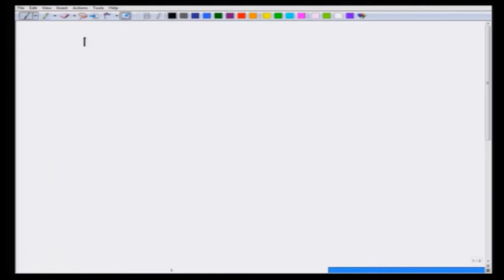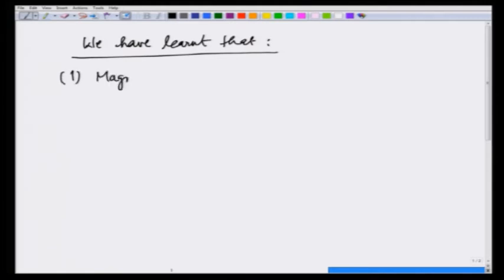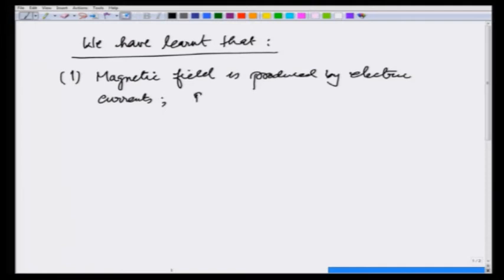We have learnt that magnetic field is produced by electric currents. The related laws that we learnt are Biot-Savart and Ampere's law.